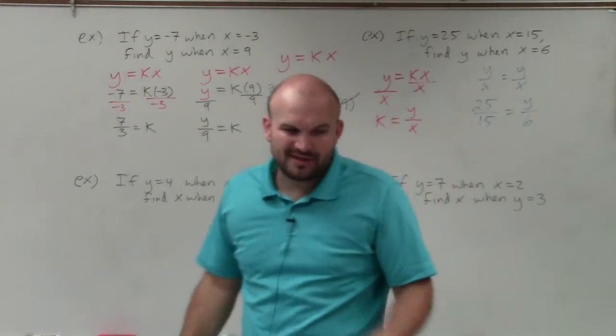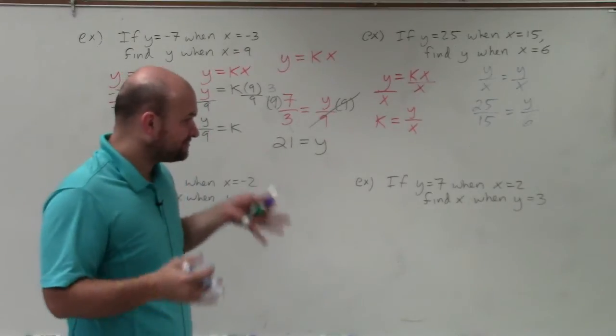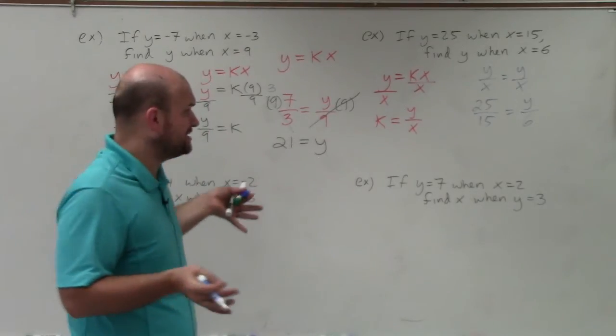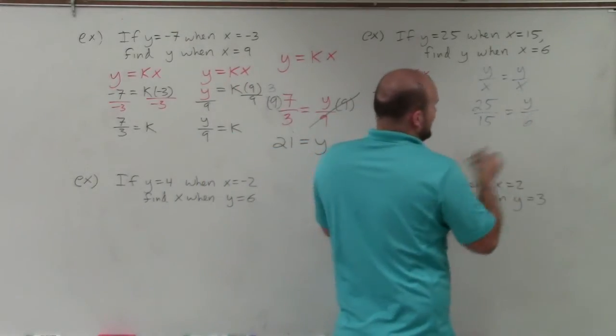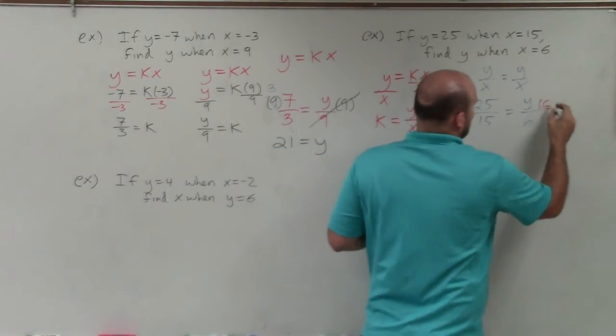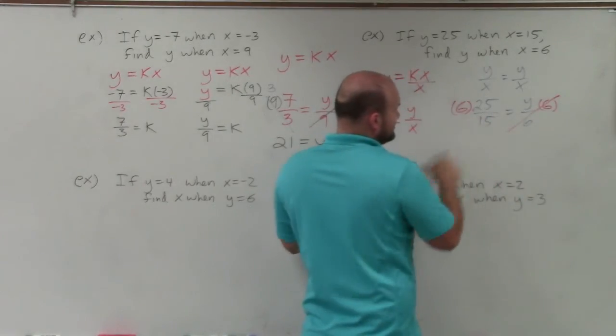A lot of students say cross multiplication. I hate cross multiplication because students use it when they're not supposed to. Why use cross multiplication unless you have to? You have your variable being divided by 6, so undo that by multiplying by 6 on both sides. That goes to 1. Then you can reduce this.